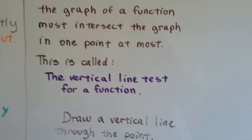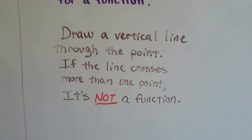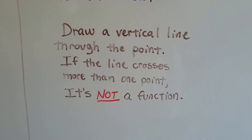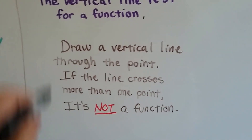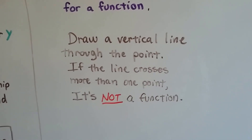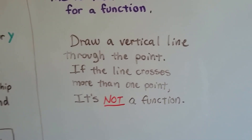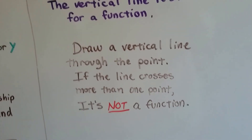What does this mean? It means draw a vertical line through the graph — vertical is going up and down. If the line crosses more than one point, it's not a function.